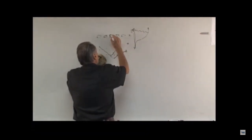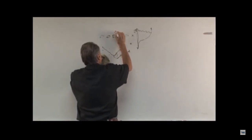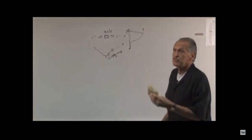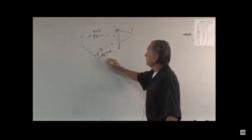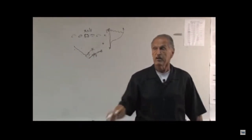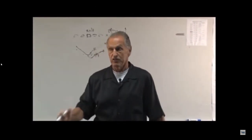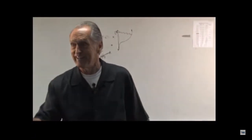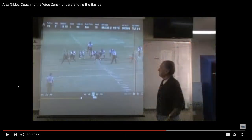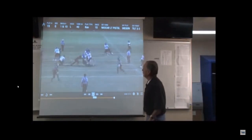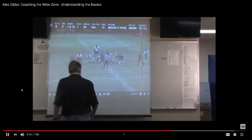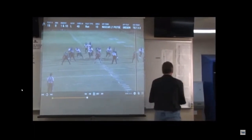Back to Alex Gibbs: take your three steps and make your read. The guy the center is blocking — it doesn't matter whether it's a shade nose, a straight up-and-down nose, or an inside two-technique — because any one of those three structures, he's working to the play side. The tailback and the center should be on a direct line. If your tailback is ever behind your center, you have no wide zone play. If he's way ahead of your center, you have no center.